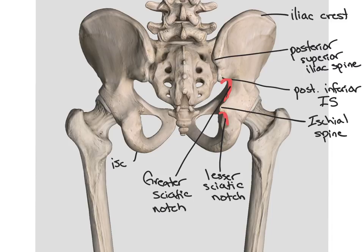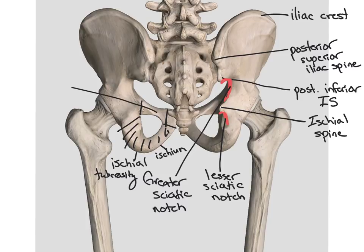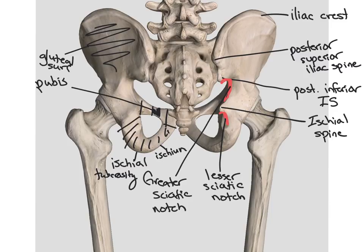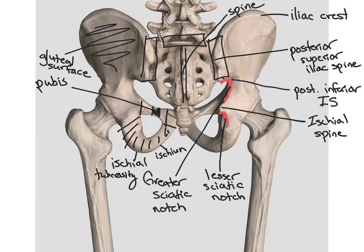Again we have our ischial tuberosity, like your butt bone. This area is called our ischium, while the area on top is called our pubis. This small area here would be our superior pubic ramus that we saw on the anterior side. The surface of the posterior side of the ilium is called our gluteal surface. On the posterior side of the sacrum, this area is called our spine of the sacrum. We also have a sacroiliac joint between the sacrum and our ilium on either side.